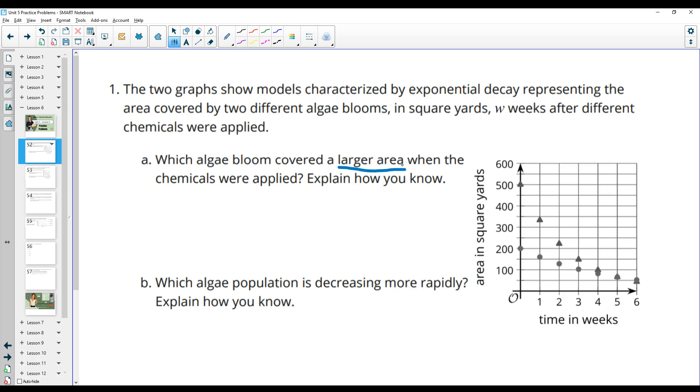So we want to know which one covers a larger area. If we look at these two different spots right at the initial, because this is dealt after zero weeks, this is the initial. Here our initial coverage is 500 and here our initial coverage is 200 square yards. So I'm just going to say this triangle one covered the larger area. This is because it covers 500 square yards versus the other one covers 200 square yards at the vertical intercept, which we also know is the initial value.